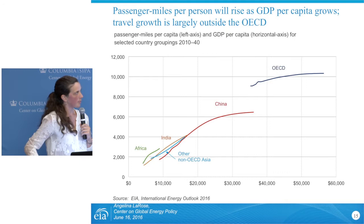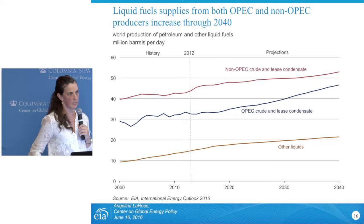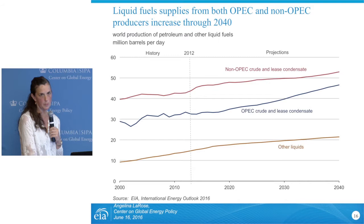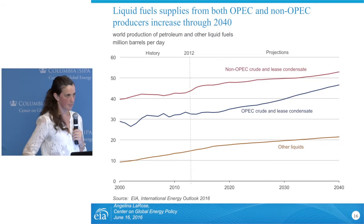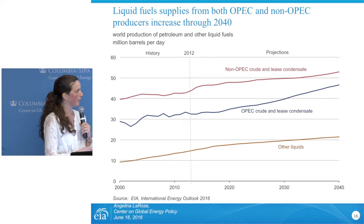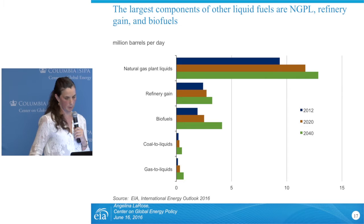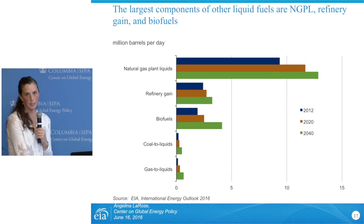In terms of where the increased liquids consumption will be supplied from, OPEC still serves an essential role, contributing more than half of the increment needed to satisfy increased consumption. For OPEC, production grows by 13 million barrels per day, compared to non-OPEC sources which grow by 10.1 million barrels per day. In terms of other liquids, the category is dominated by NGLs — natural gas plant liquids — largely as a co-product with natural gas production.